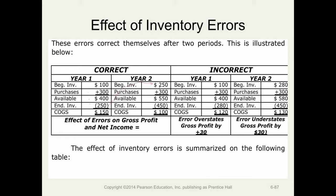Now let's assume an error is made: ending inventory is overstated by $30. Ending inventory should have been 250 but is now stated at 280. With the same beginning inventory and purchases, goods available remains 400 and ending inventory is 280, making cost of goods sold 120 — which is not correct; it should have been 150. This overstates profit by 30.